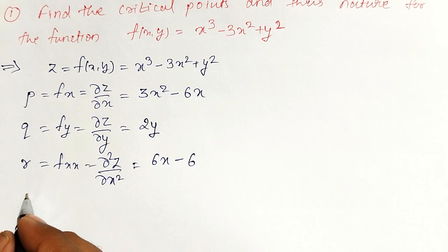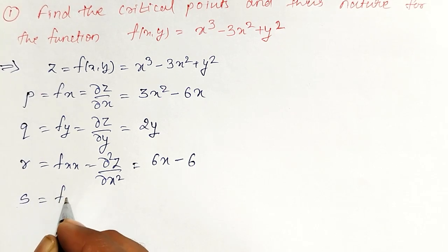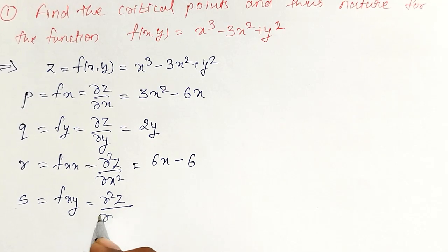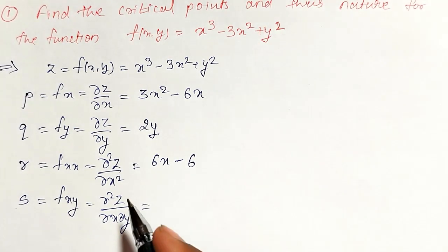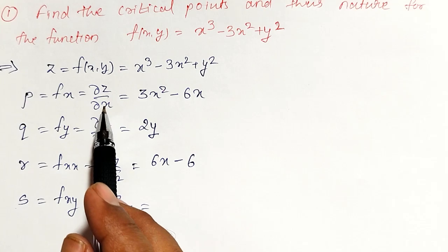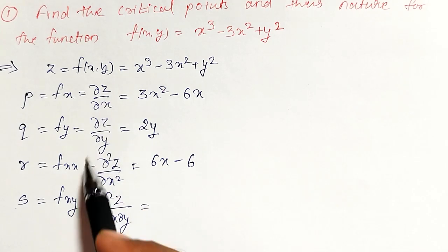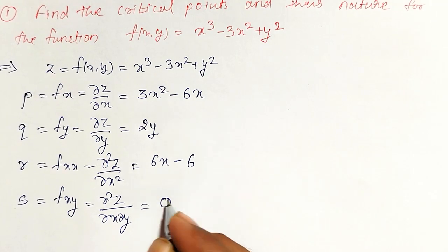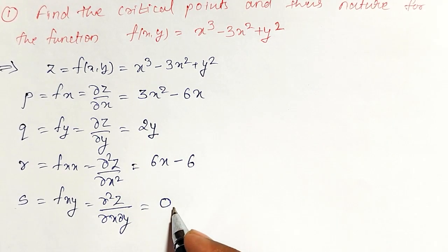Next, I will calculate it as fxy. That is partial square z by partial x partial y. I have to differentiate fx with respect to y again. It will be 0. No y term is here. Therefore, it is 0.